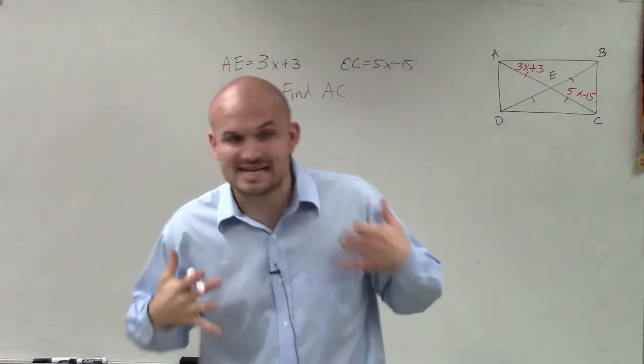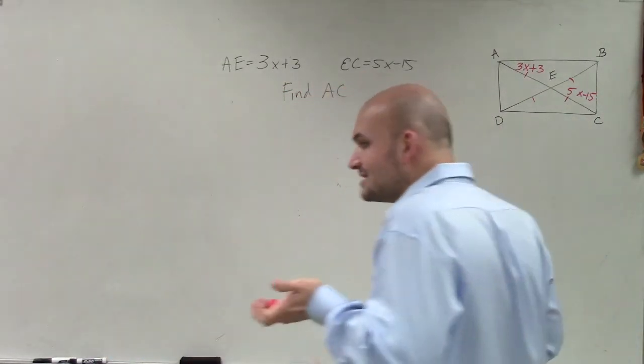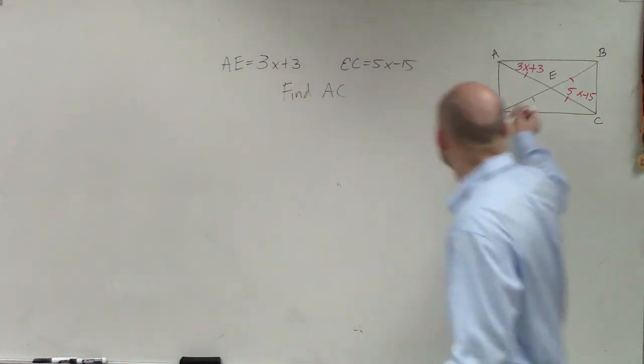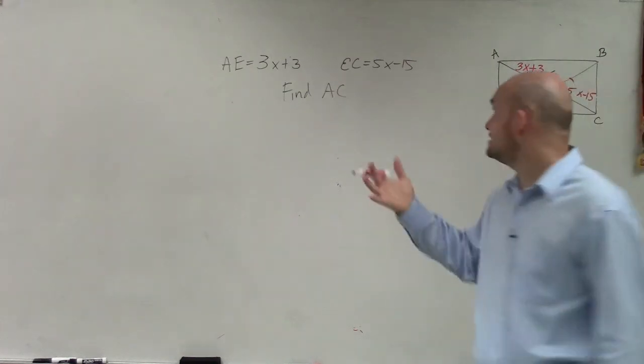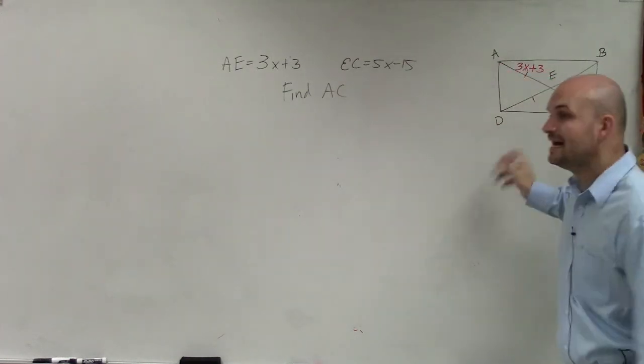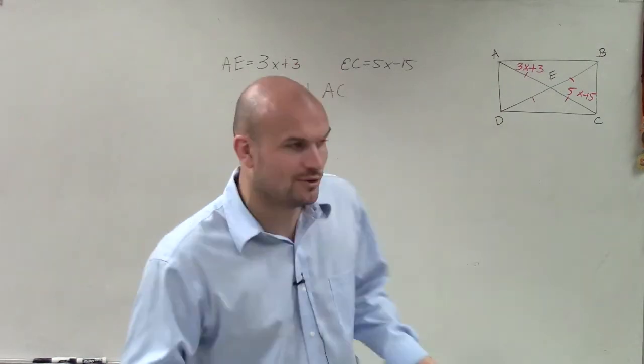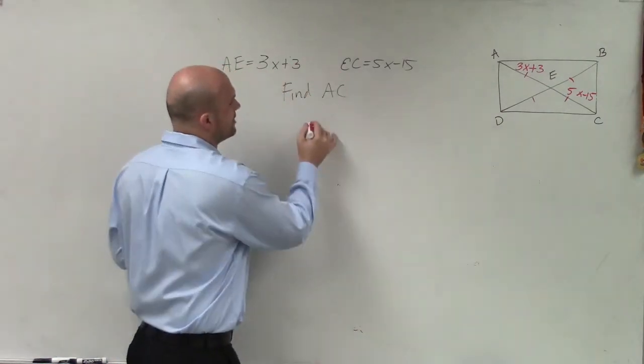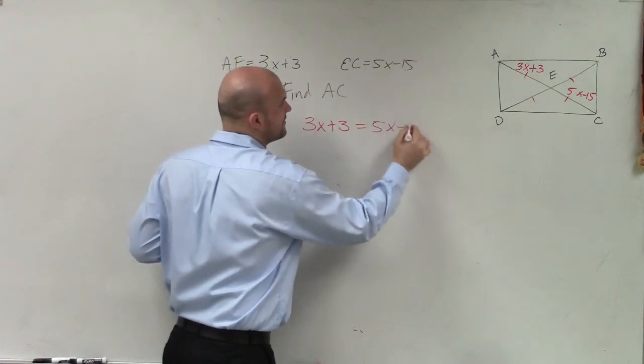Now remember, this is a rectangle where the diagonals are bisected. So this side is the same measurement as this side. So if I need to find the length of AC, I need to find the value of x. I cannot find the value of x unless I set an equation. So the equation I'm going to write is 3x plus 3 is equal to 5x minus 15.